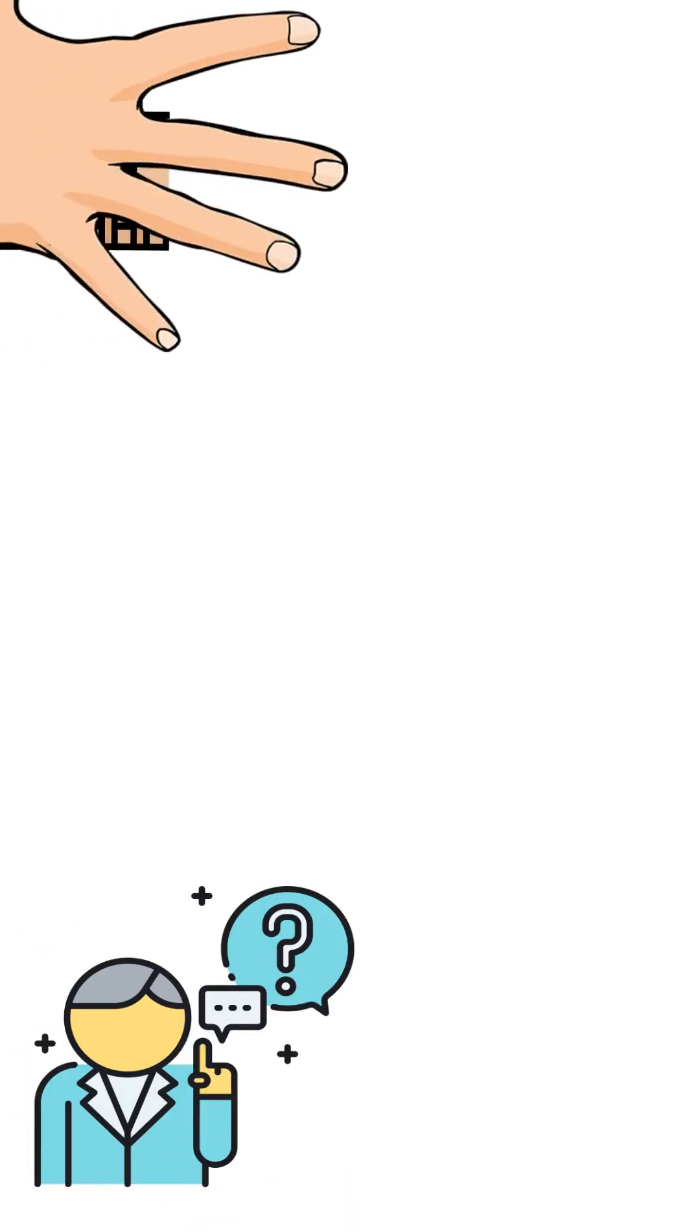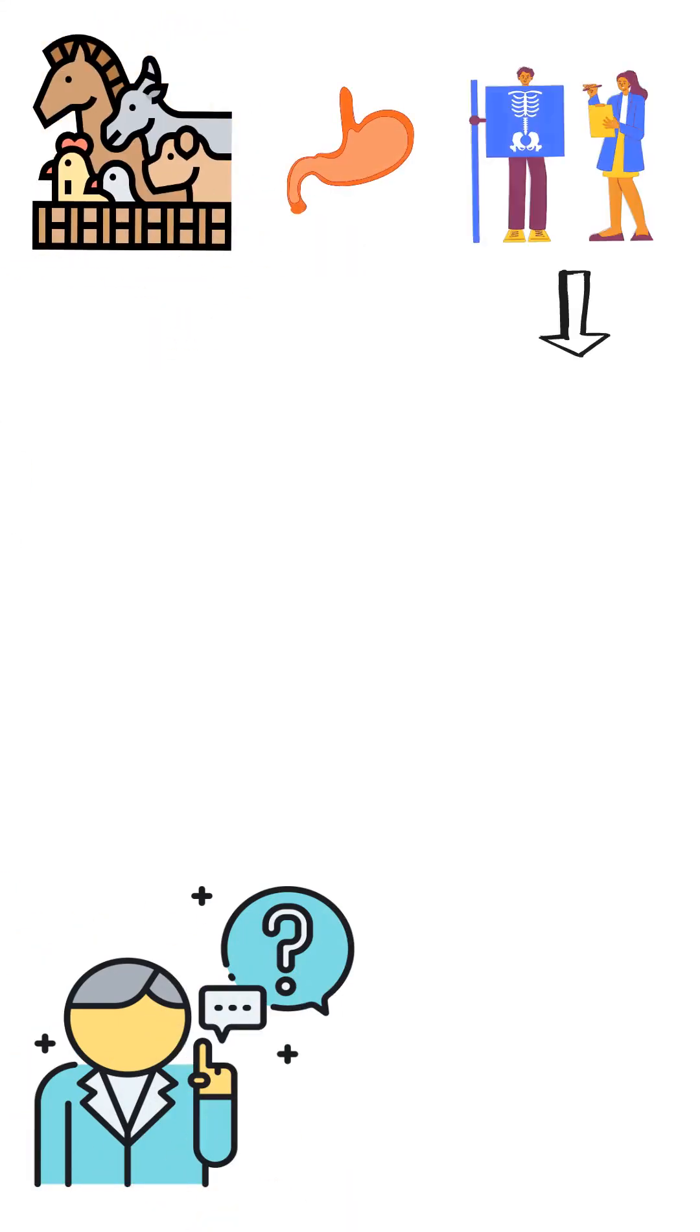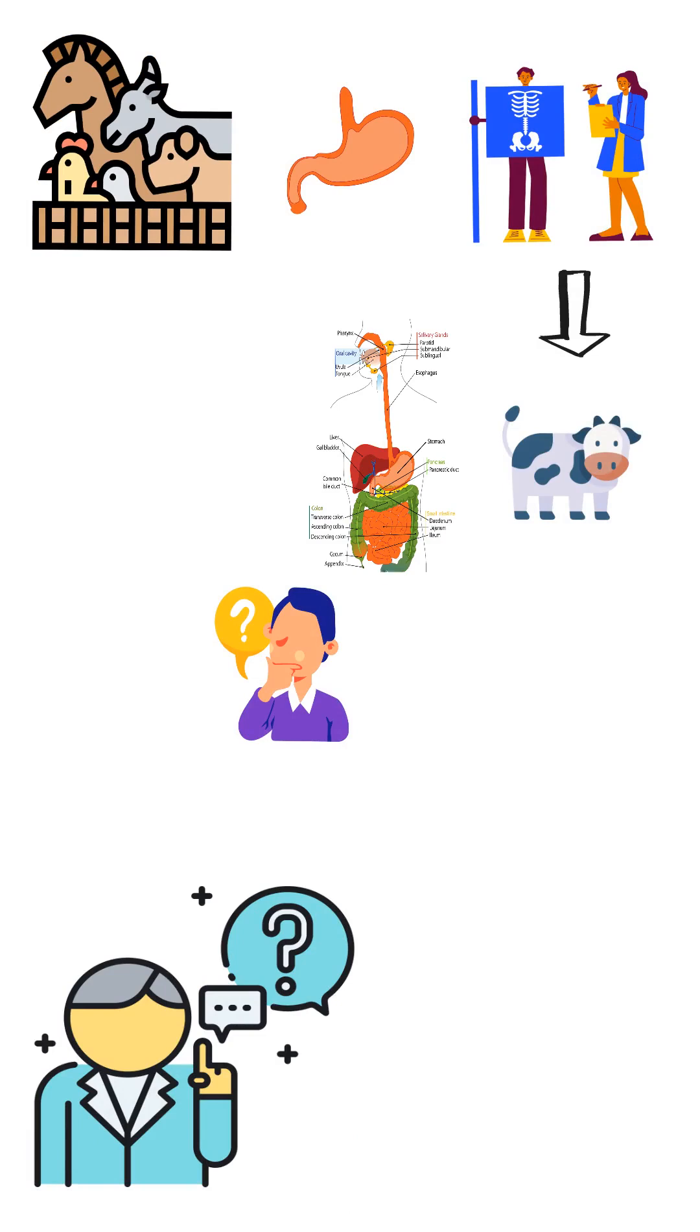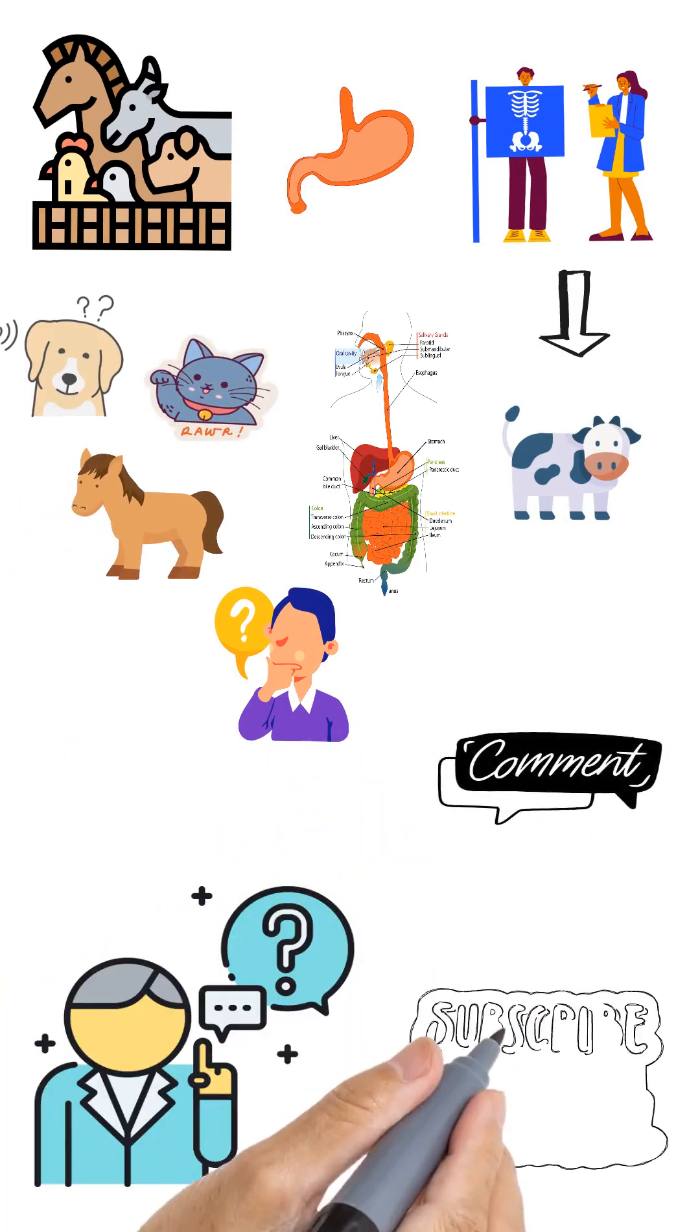Question for today: which other animal have shared stomach anatomy as cow and which type of stomach does dog, cat and horse have? Write down in a comment and subscribe for more.